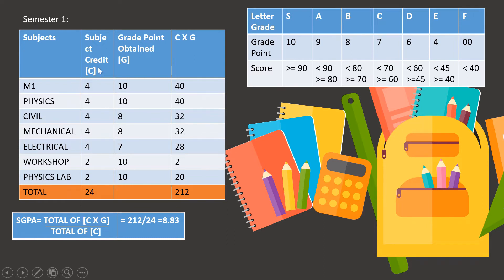Now multiply the credit into the grade point. As you can see in this example, 4 into 10 is 40, 4 into 8 is 32 and so on. Now you will have to total the C into G and when we total this, this comes up to 212.